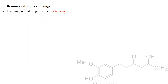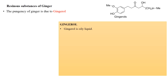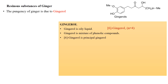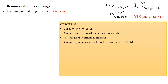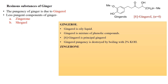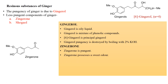The pungency of ginger is due to gingerol. Gingerol is an oily liquid and is a mixture of phenolic compounds. 6-Gingerol is the main component of the mixture. Ginger is pungent in taste and its pungency is destroyed by boiling with 2% potassium hydroxide. Ginger also has less pungent components such as gingerol and shogaol. Gingerol is pungent but also possesses a sweet odor. The pungency of gingerol is destroyed by prolonged contact with 5% sodium hydroxide.